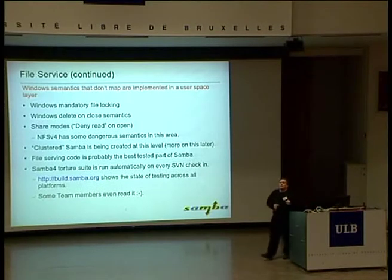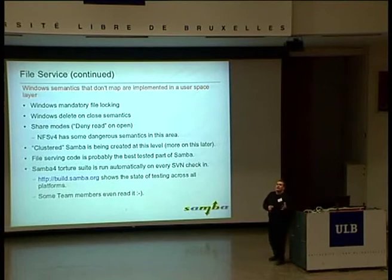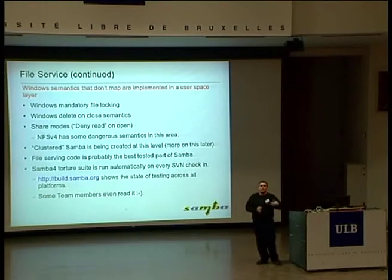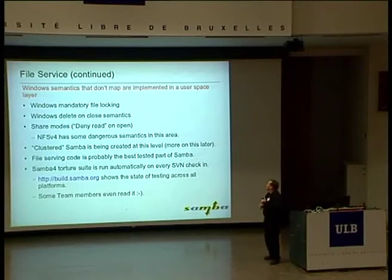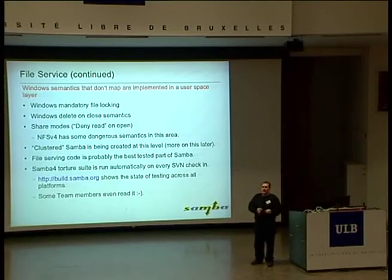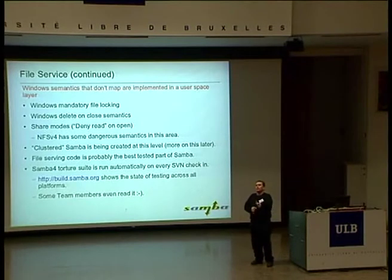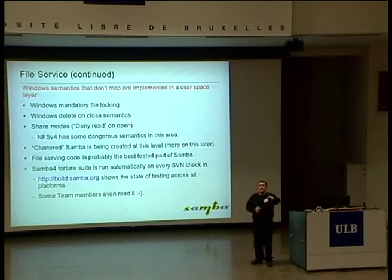What do we do about the pieces of Windows that just don't map very well to POSIX? We emulate them. This is the hard part of Samba — and at least the fun part — how to map these somewhat different Windows semantics onto a POSIX model. We have to have mandatory file locking, because that's what Windows clients expect. We have to have some very interesting delete-and-close semantics. With POSIX, when you delete a file, it just disappears from the directory listing immediately, regardless of how many other people have it open — it will remain active until the last opener has closed it, then it goes away.